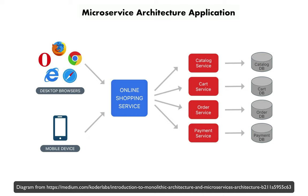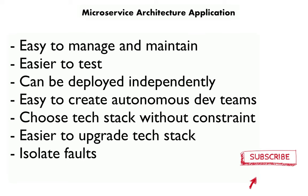The solution is microservices, in which your application is composed of a set of loosely coupled collaborating services. In this type of architecture each service is easy to maintain and test, it is loosely coupled and can be worked on and deployed independently. Benefits include maintainability because the manageable size makes them easier to understand and change. Services are smaller and easier to test, they can be deployed independently, and you can organize development around multiple autonomous teams. You can choose your tech stack without being constrained by the rest of the application, upgrade your technology much more easily, and also isolate faults without them bringing down the entire application.